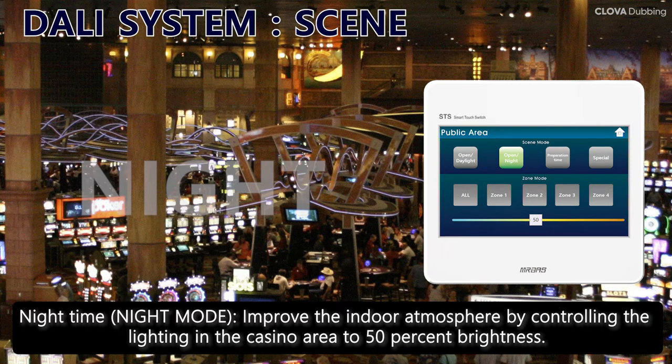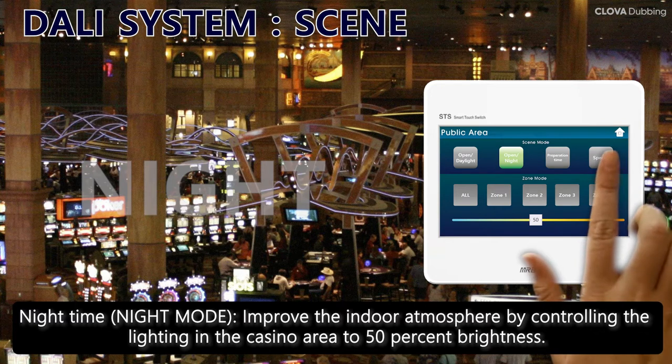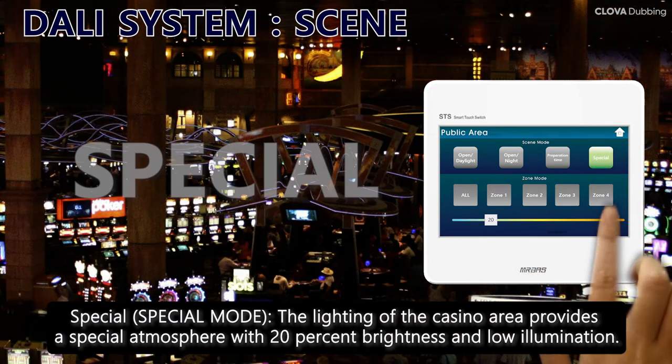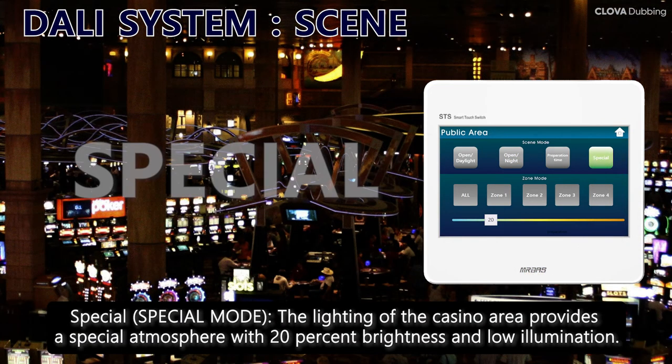Next is Open Night mode. This scene improves the indoor atmosphere by controlling the lighting in the casino area to 50% brightness in night mode. Next is Special mode — in this scene the lights in the casino area are set to 20% brightness to create a special atmosphere.